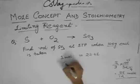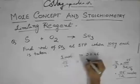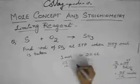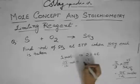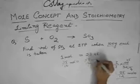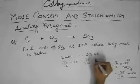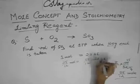So 25 by 12 moles would be 25 by 12 into 22.4 liters, which you can calculate.